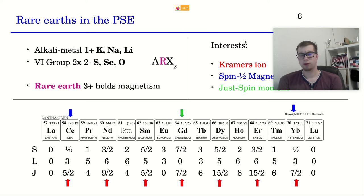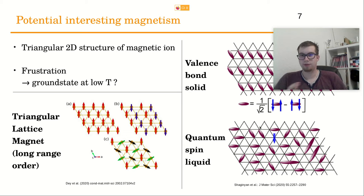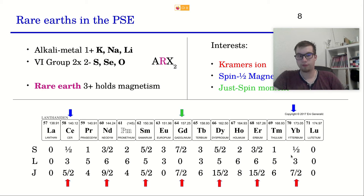Why spin-1/2? The first point is that spinon excitations occur because they also have a spin of one half. Secondly, we have something with up and down which works perfectly at spin-1/2. If you have higher moments, you get other effects that may not be as clean. Therefore the first idea was to use spin-1/2, and that corresponds to the lanthanides cerium and ytterbium, which have spins of one half plus some orbital momentum giving a resulting total moment.